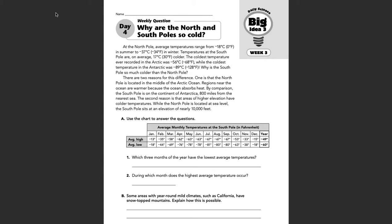Why is the South Pole so much colder than the North Pole? There are two reasons for this difference. One is that the North Pole is located in the middle of the Arctic Ocean, and regions near the ocean are warmer because the ocean absorbs heat. By comparison, the South Pole is on the continent of Antarctica, 800 miles from the nearest sea. The second reason is that areas of higher elevation have colder temperatures. While the North Pole is located at sea level, the South Pole sits at an elevation of nearly 10,000 feet.